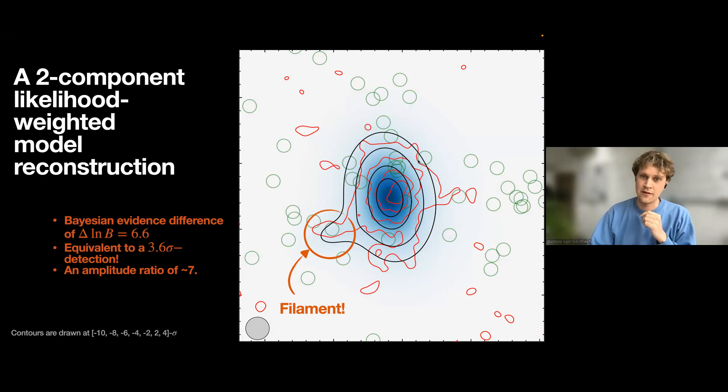But now we see that we have the bulk of the intercluster medium captured by this larger model, and there's a small asymmetric feature here. And because we do nested sampling, we can have access to the Bayesian evidence, and we find a Bayesian evidence difference of 6.6. That means that the data favors a two-component model over a single-component model by roughly four sigma. So I think that's really cool.